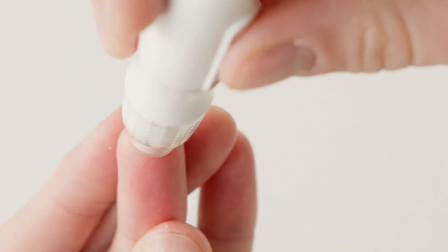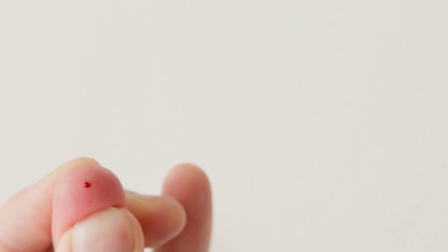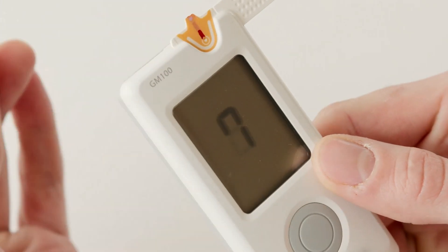Currently, people with diabetes must prick their fingers to extract and test their blood several times a day using glucometers.